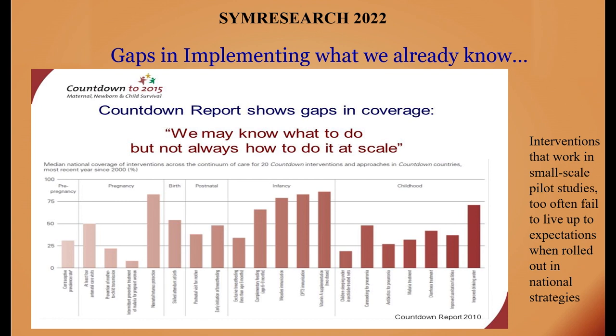That means 100% of mothers or 100% of children and newborns don't get the benefit of what is already known. These are called implementation gaps — we know what to do, but either patients or families can't reach health facilities, or workers from health facilities can't reach families, or there are inefficiencies in diagnosis and management, or barriers outside the health sector like transport and economics. Several reasons exist why known treatments don't reach 100% coverage.